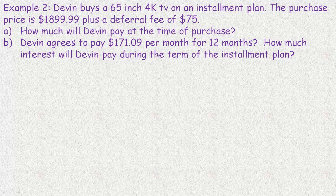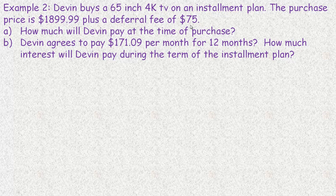In the second example we're going to see some interest. Devin buys a 65-inch 4K TV on an installment plan. The purchase price is $1,899.99, and we're assuming Devin doesn't have enough money to pay for it right away. There's also a deferral fee or administrative fee of $75, which is very normal for a store to charge because they have a cost associated with arranging the plan and are not getting their money right away.